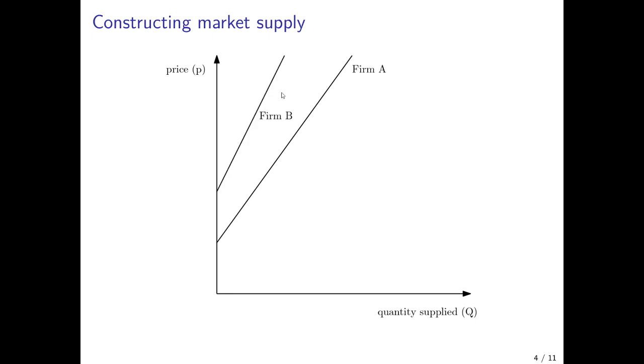Now there is a second firm, firm B, that has this supply curve here, which would imply that actually firm B faces a higher fixed cost. So it would produce only for a higher price level here and perhaps even higher operating costs because the supply curve is steeper.